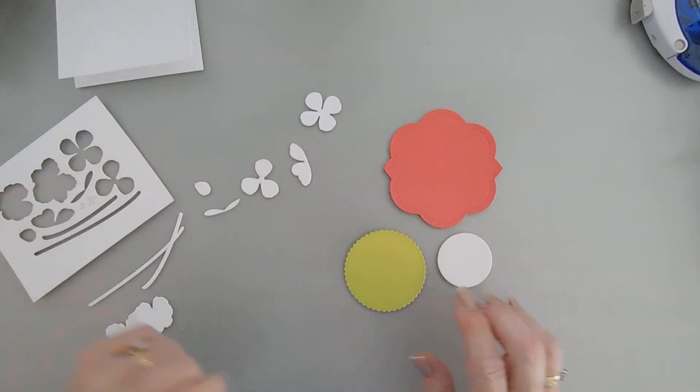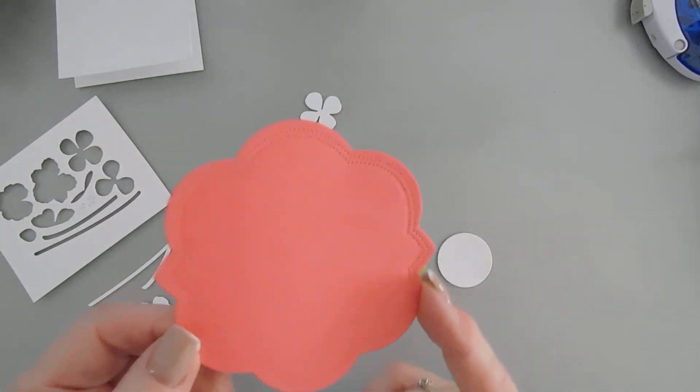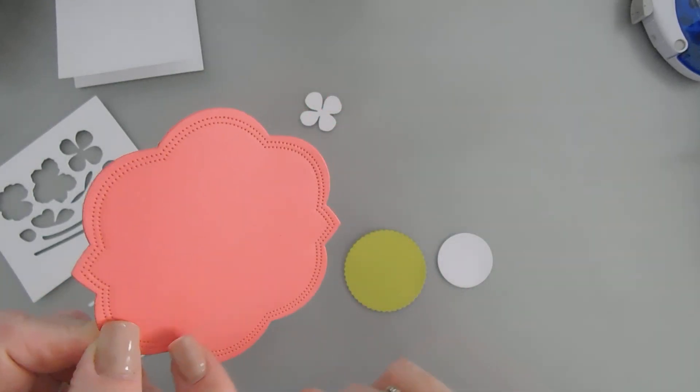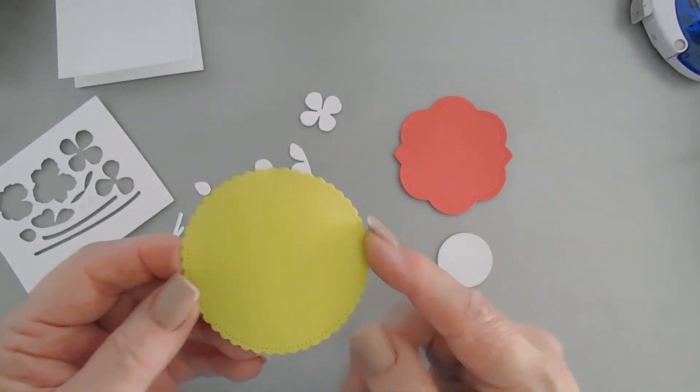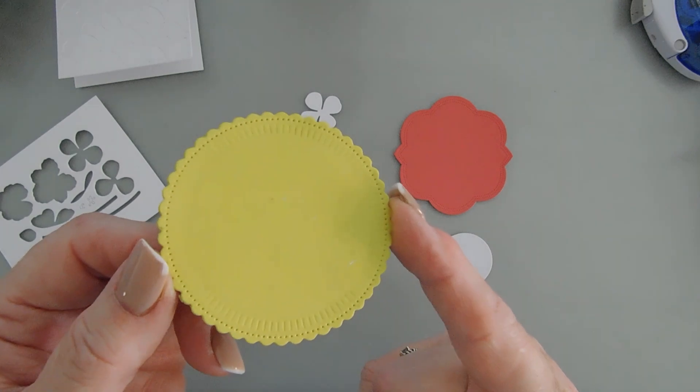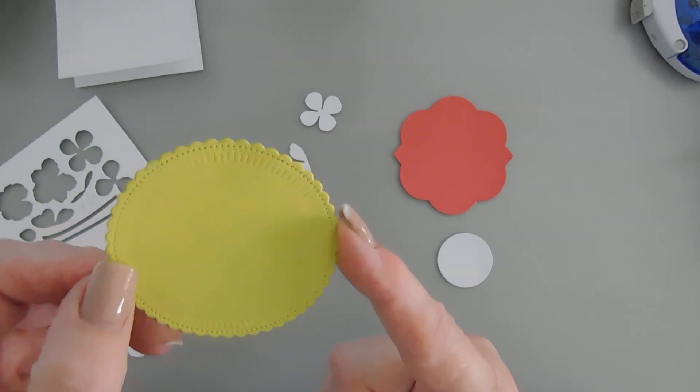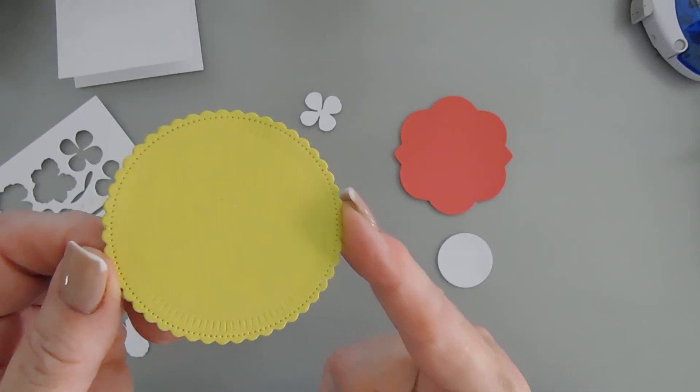Before we do our ink blending, I wanted to share with you how pretty the detail is in the Love to Layer charming brackets. You see the detail? How it's doubled up on the dotted detail? So pretty. And then you have the middle one. This one has that itty scalloped edge, dotted detail, and then it also has debossed detail. So pretty.